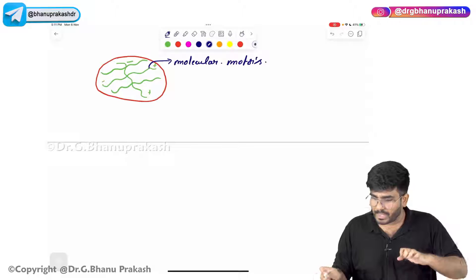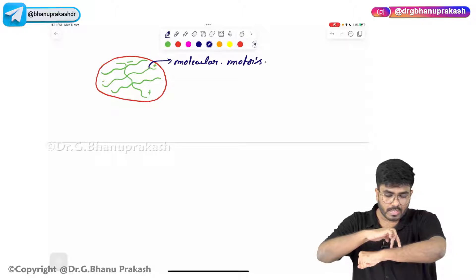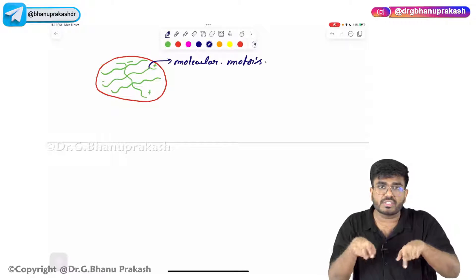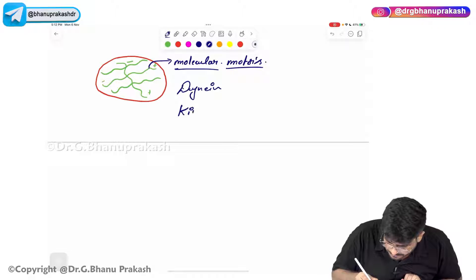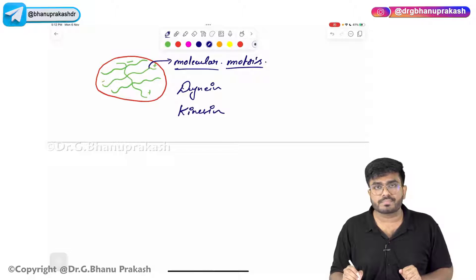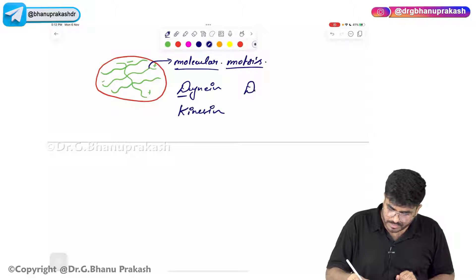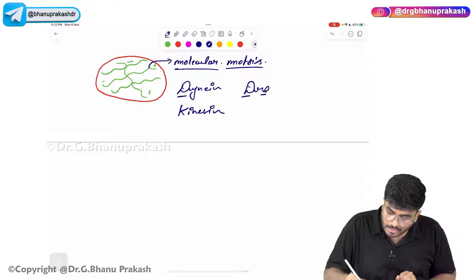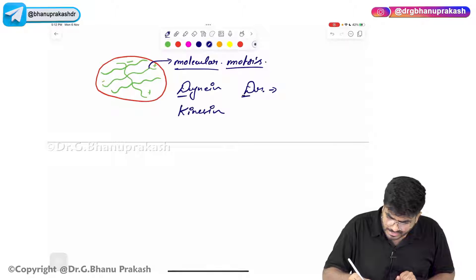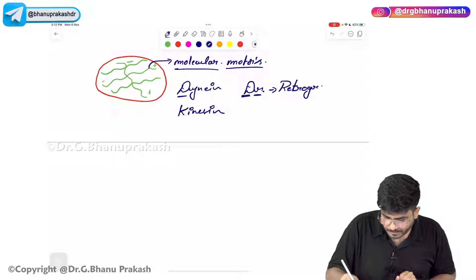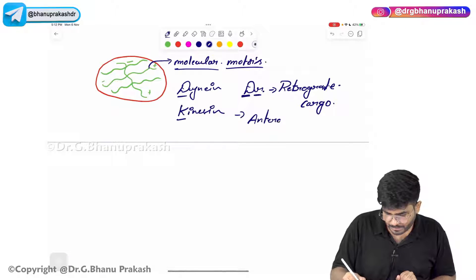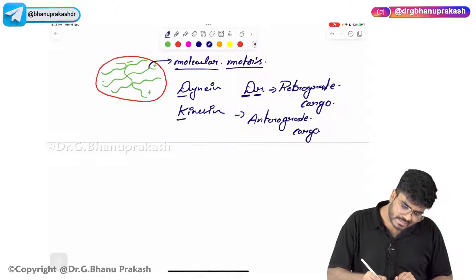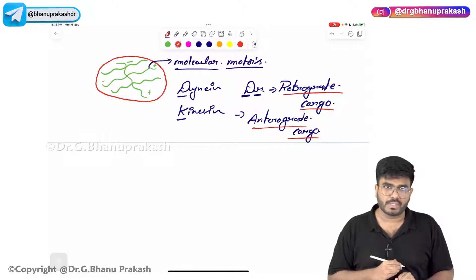A useful mnemonic is DR: Dynein helps in Retrograde cargo transport, while Kinesin helps in Anterograde cargo transport. On a microtubule with a positive and negative terminal, if a molecular motor carries substances from the positive toward the negative side, that is retrograde transport — that's dynein. If it moves toward the positive terminal, that is anterograde transport — that's kinesin.